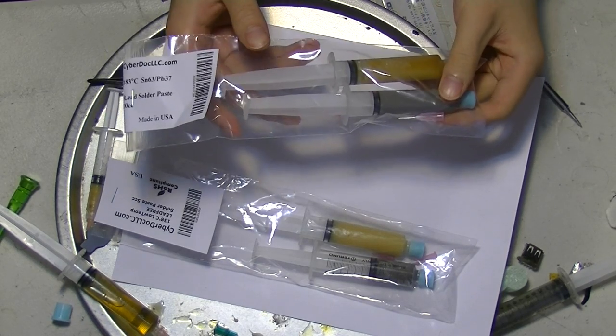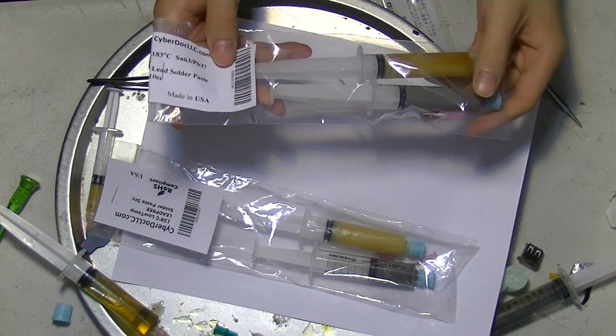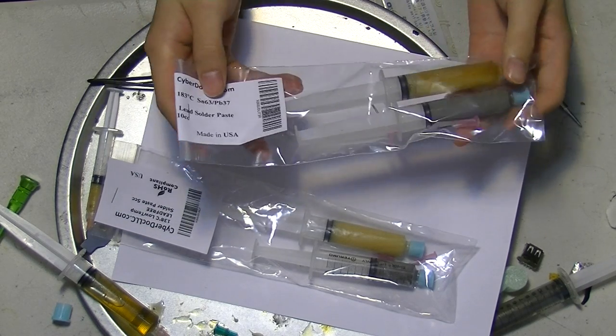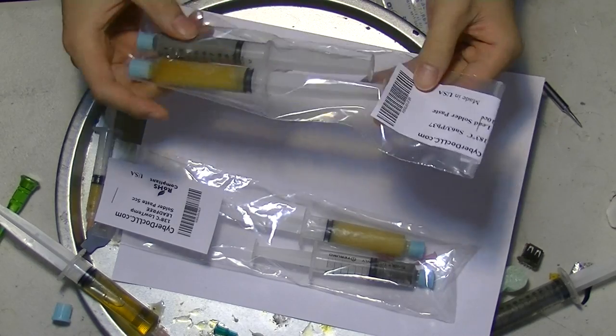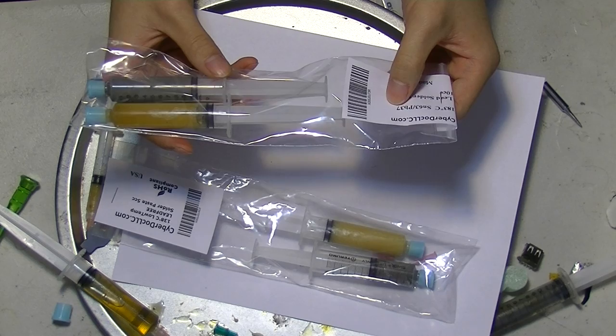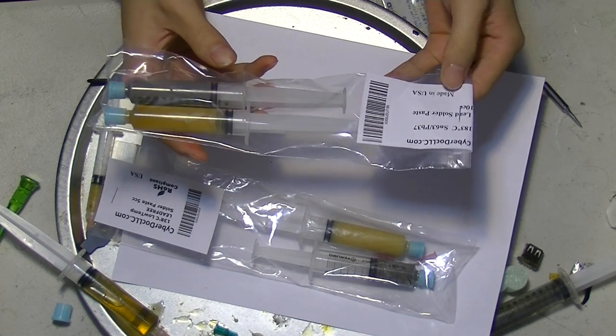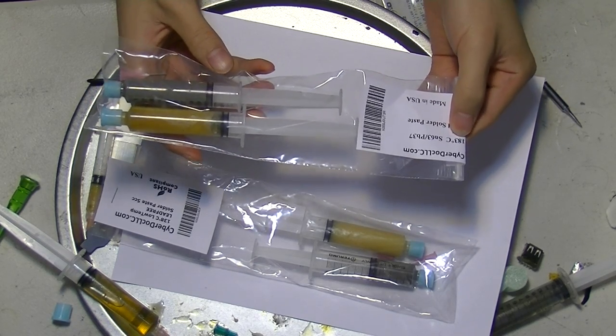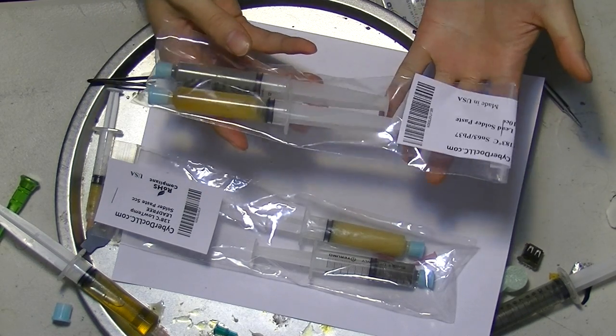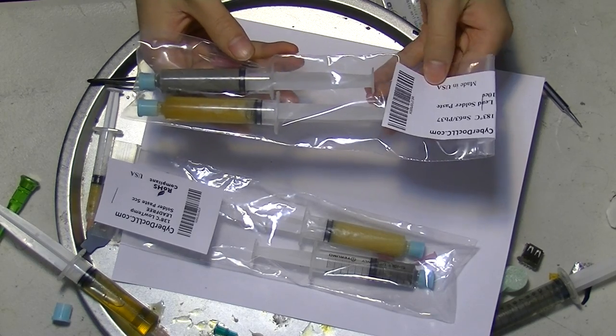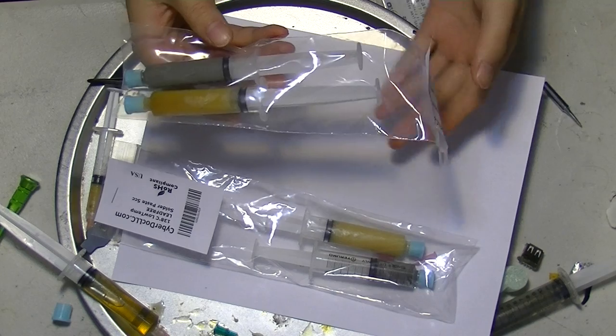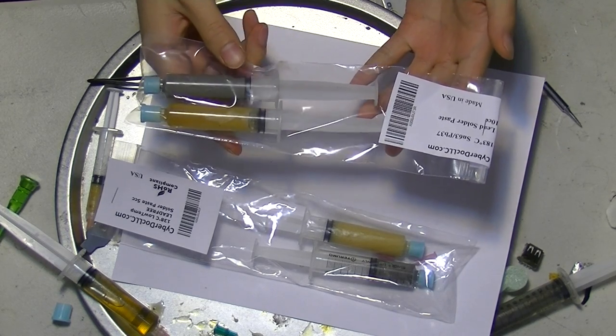Leaded solder are the best solder, it makes excellent thermal bond, high tensile strength, doesn't break. The one we sell is a very standard 63 tin and 37 lead leaded solder. We model it as 183 degrees Celsius, because that's the melting point of this solder paste. All our solder paste are made in US, and we don't buy anything from China. Everything we sell is mostly made in US.